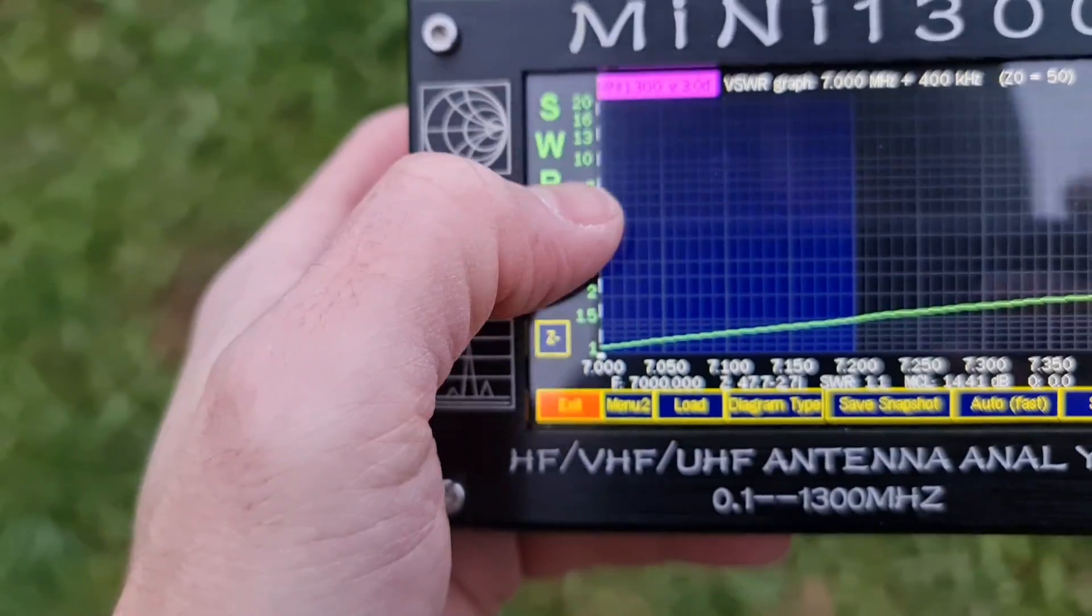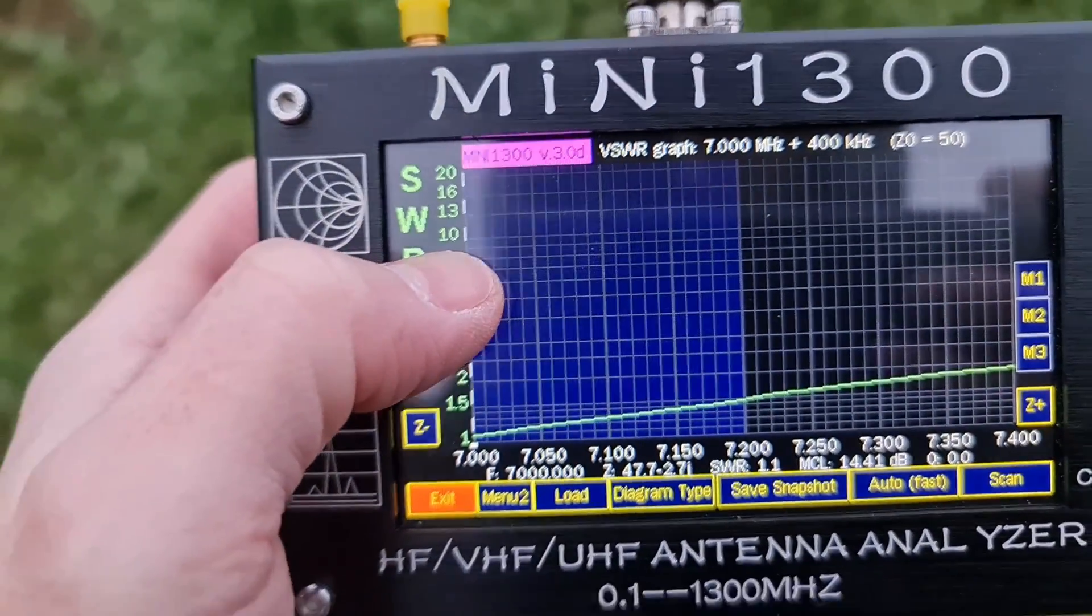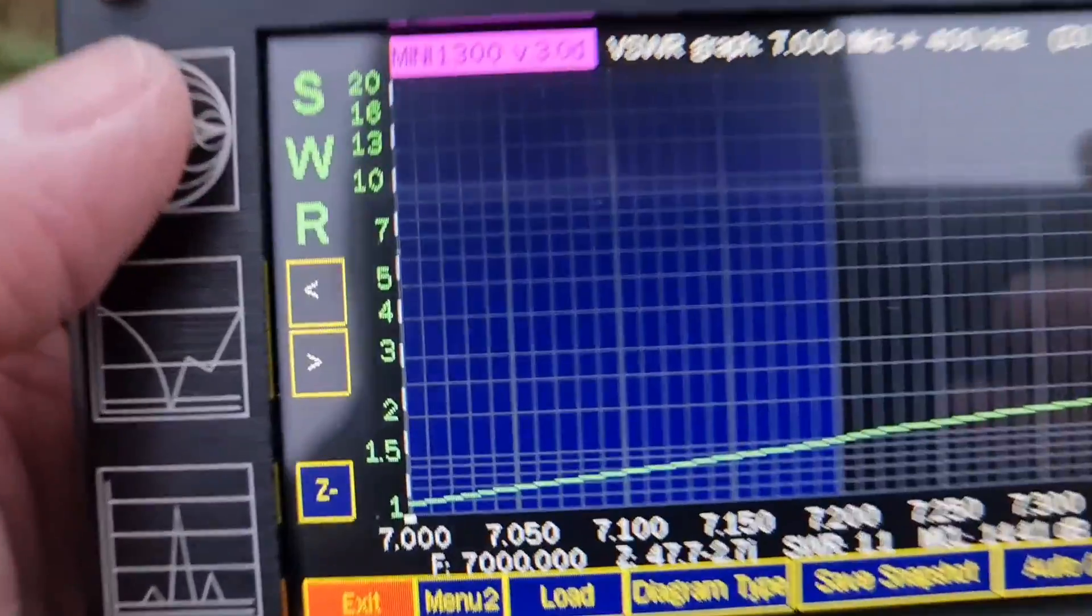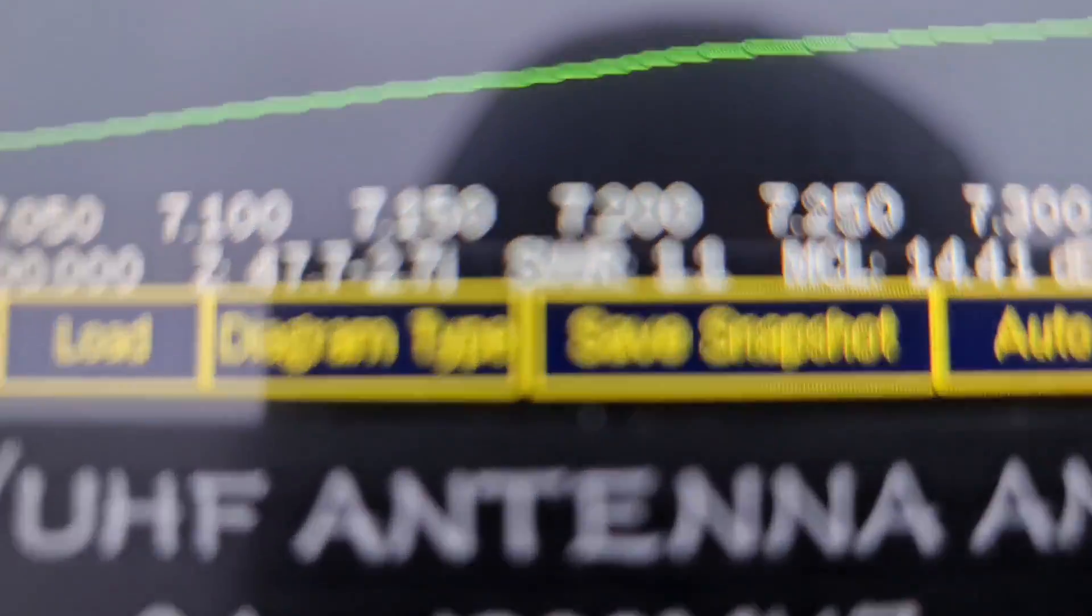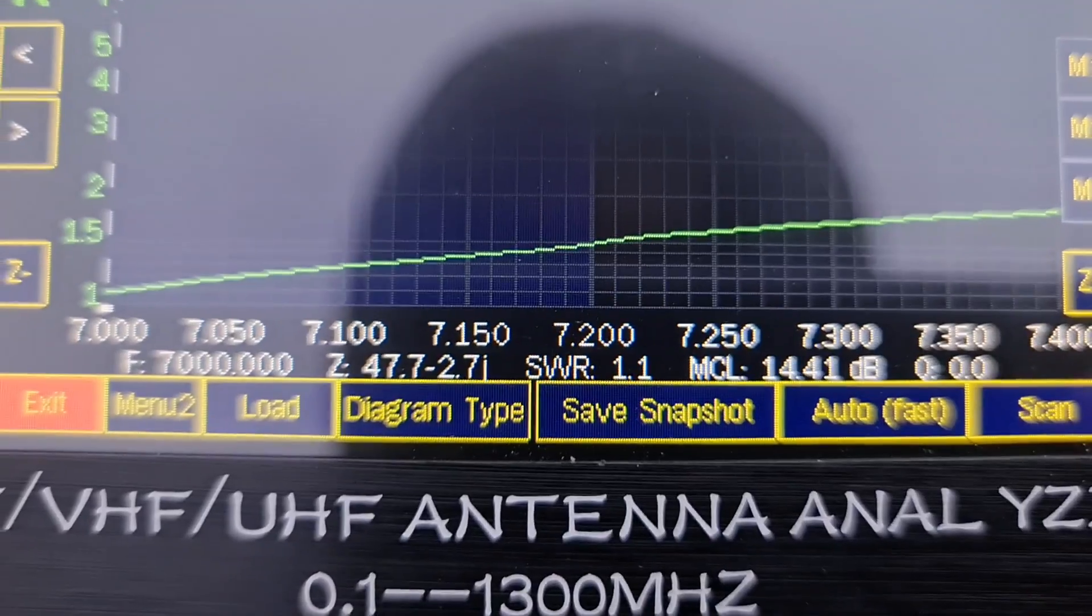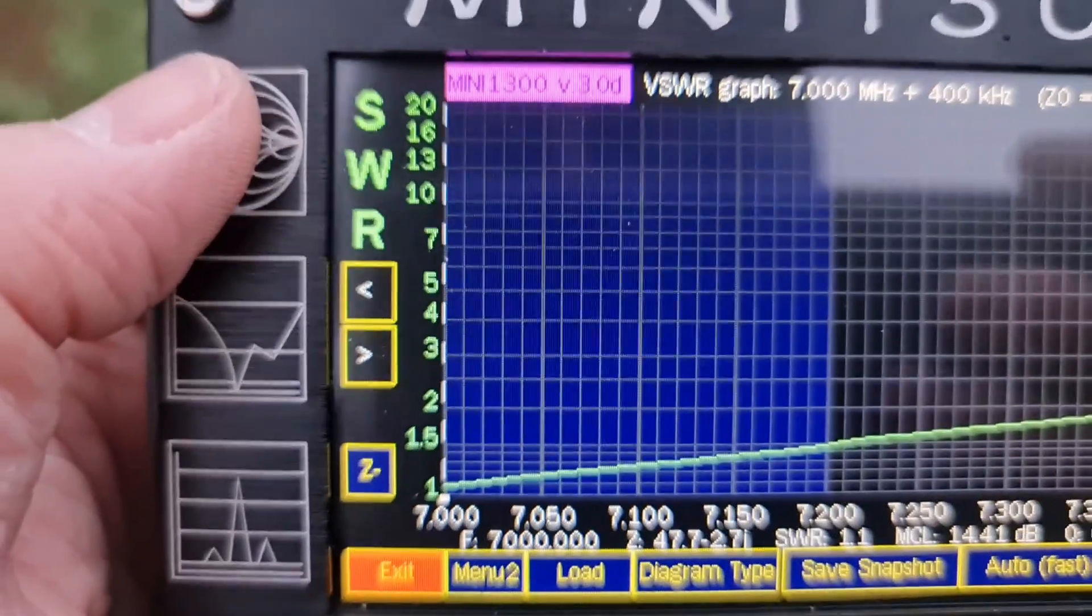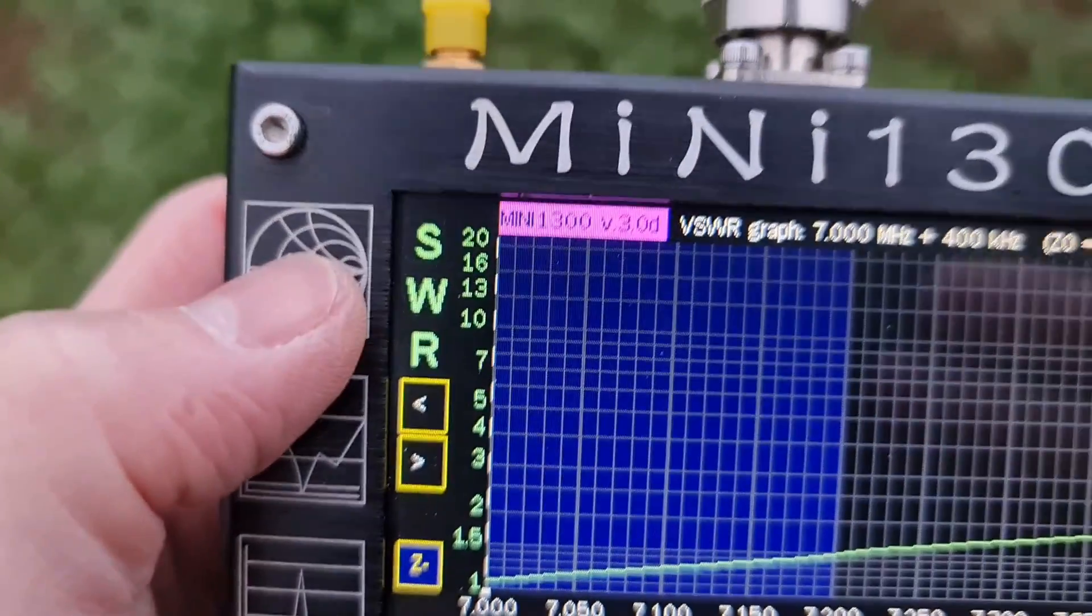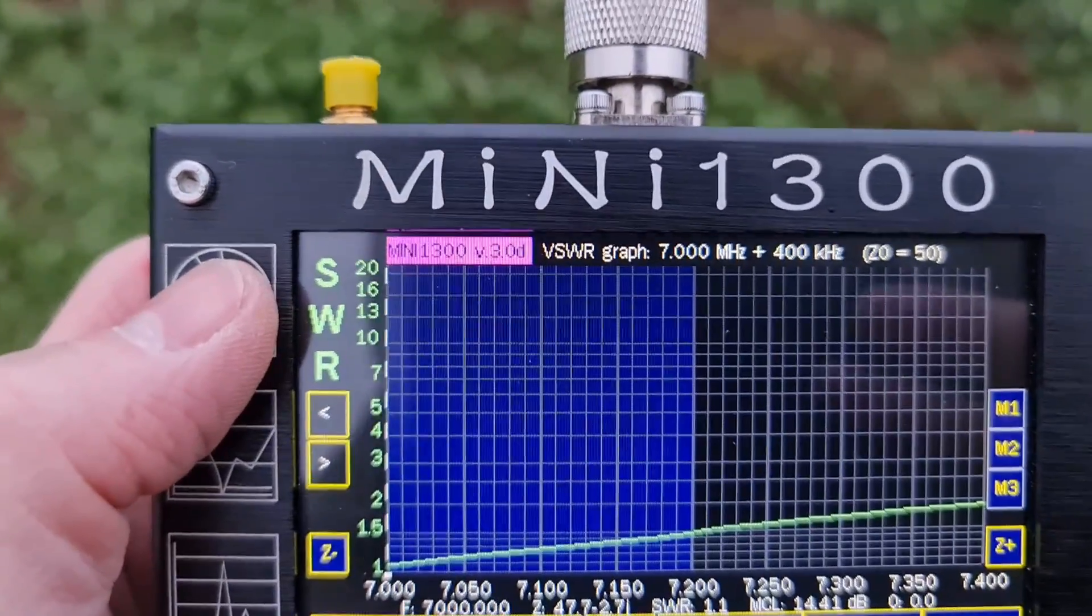The SWR is 1.1 on the frequency 7 megahertz. If I shorten this antenna a little bit, maybe one or two centimeters, it should be fine.